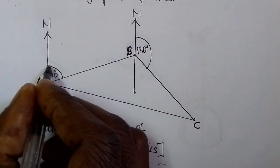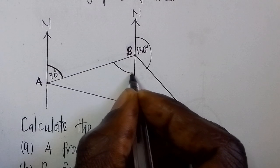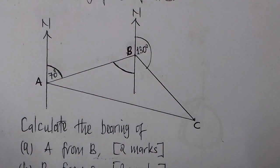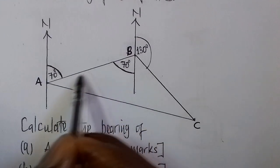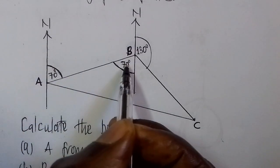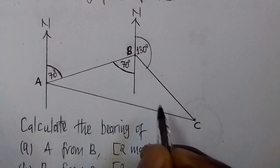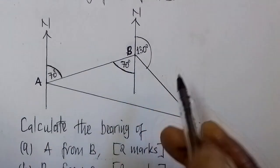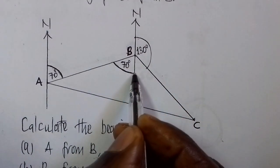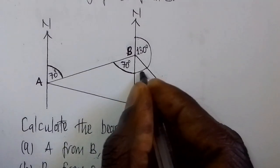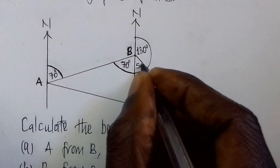If this angle here is 70 degrees, then it means that this angle here is also 70 degrees. These two angles are alternate angles — they fall on different sides of the transversal and inside the parallel lines. Then to find the remaining angle, we use the straight line angle of 180 degrees. So 180 minus 130 gives us 50 degrees.